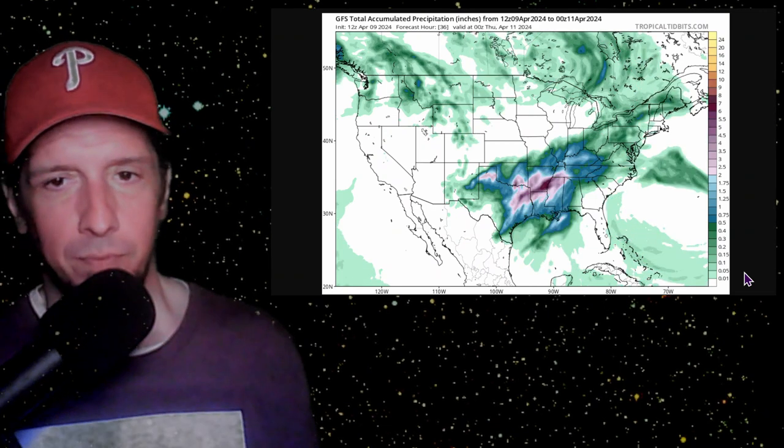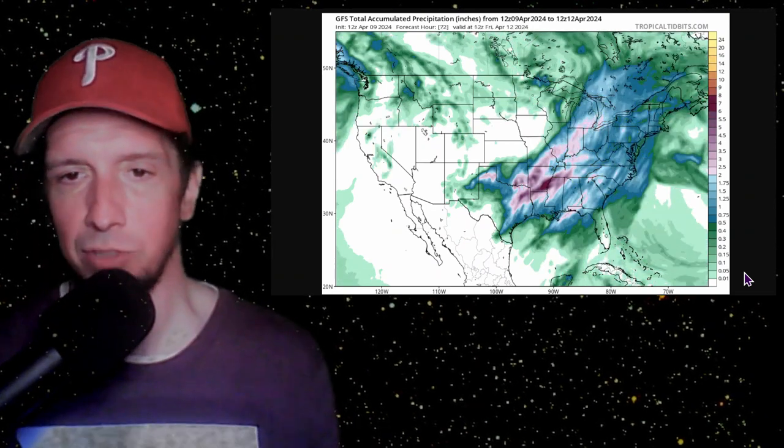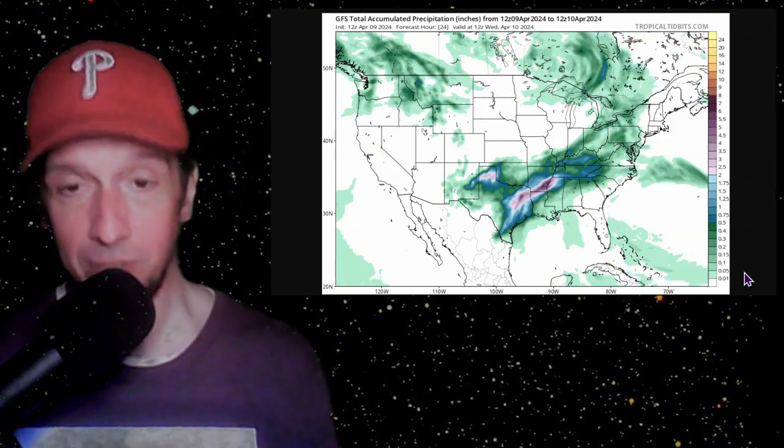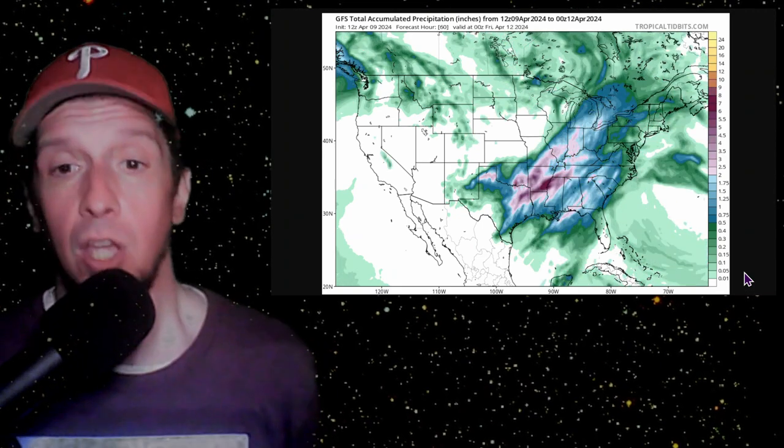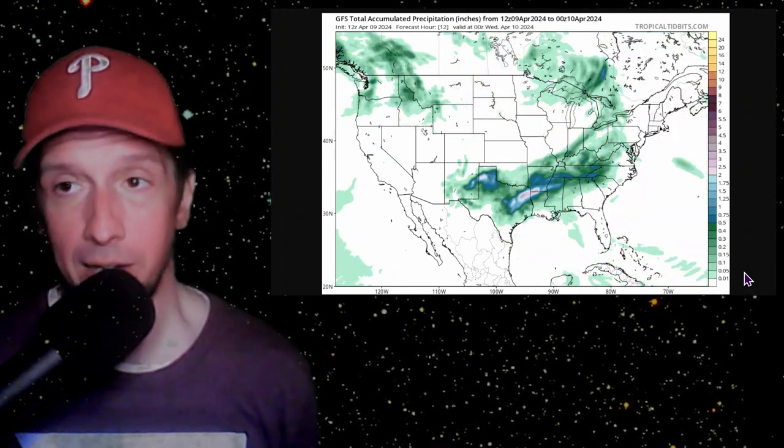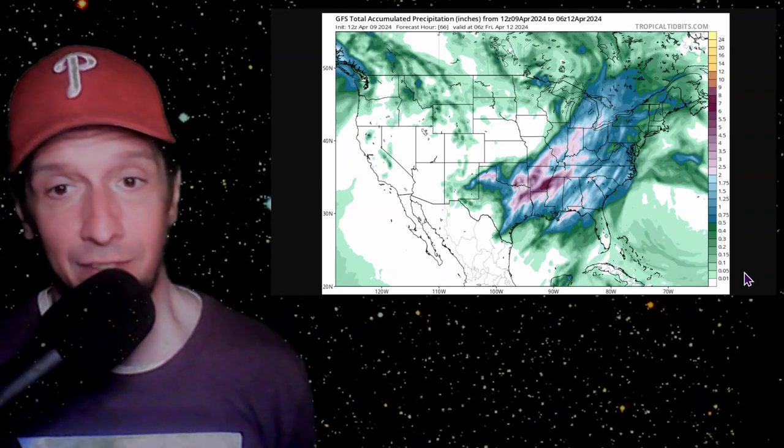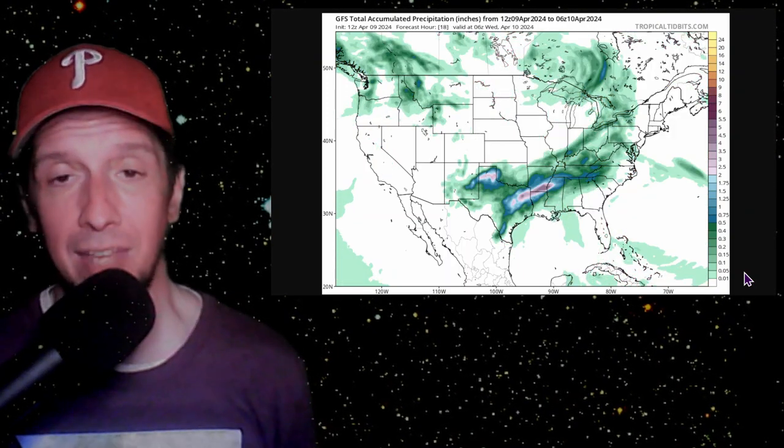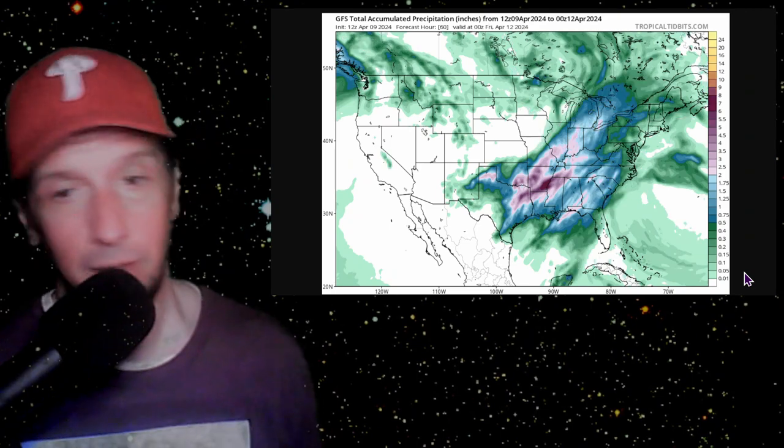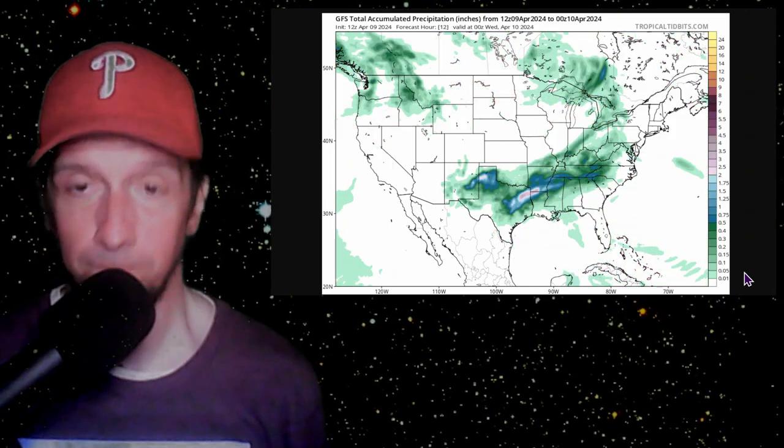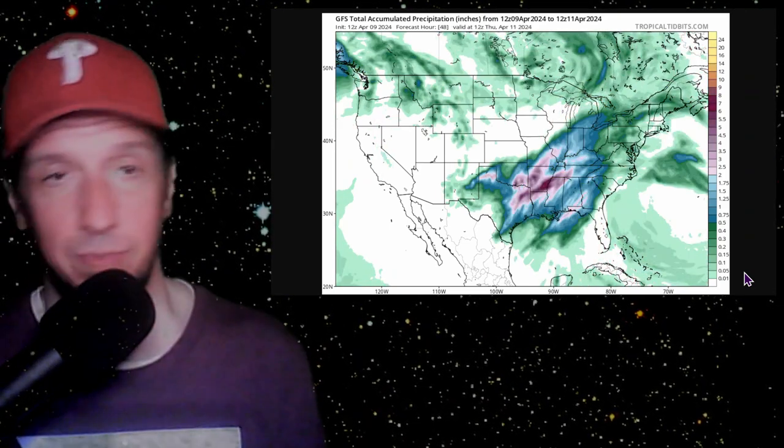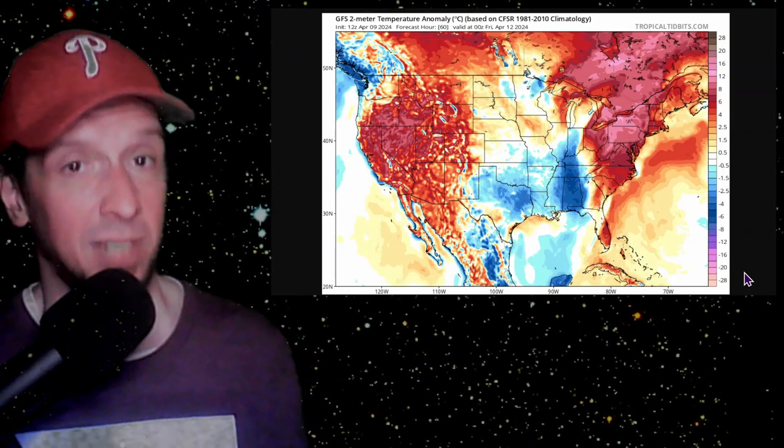Next, accumulated precipitation in inches. Once again like we said yesterday, Arkansas, you're getting plastered with rain here, something like seven inches of rain, especially in the southeastern portion of the state. That's the forecast precipitation.